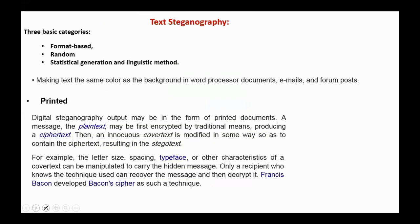There are three basic categories of text steganography: format-based, random statistical generation, and linguistic method. For example, making text the same color as the background in a word processor is one form of format-based text steganography.